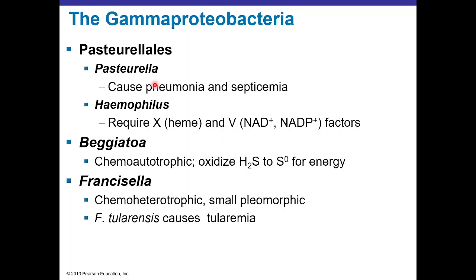Pasteurellales includes Pasteurella multocida, which causes infections after cat or dog bites and can lead to pneumonia and septicemia. Haemophilus requires blood factors X (heme) and V. Beggiatoa lives in the environment and oxidizes hydrogen sulfide to elemental sulfur for energy — it is chemoheterotrophic. Francisella is a pleomorphic, small chemoheterotrophic bacteria. Francisella tularensis causes tularemia, transmitted by contact with rabbits.